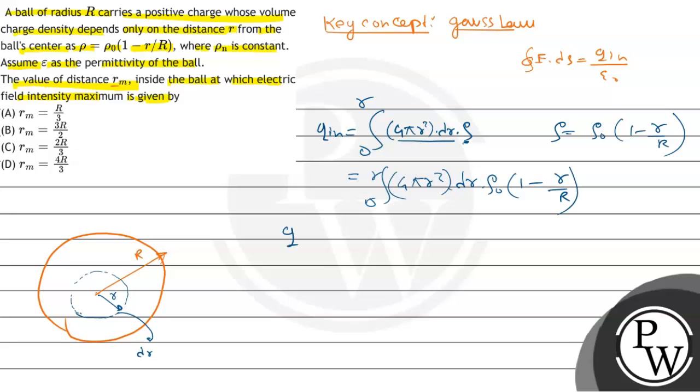Integrating, we find 4πρ₀(r³/3 - r⁴/4R). So it is our q inside.